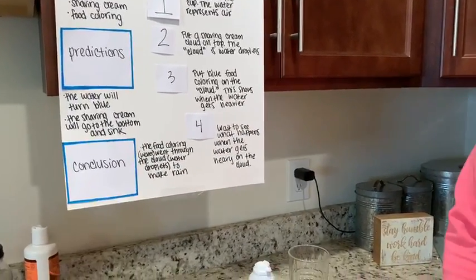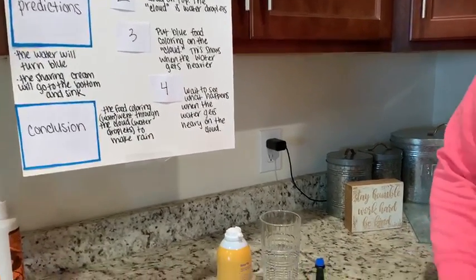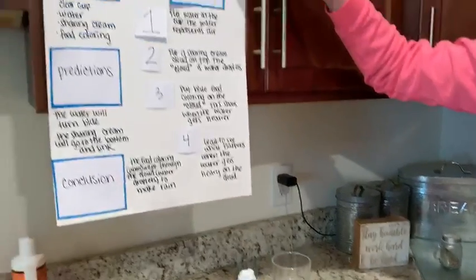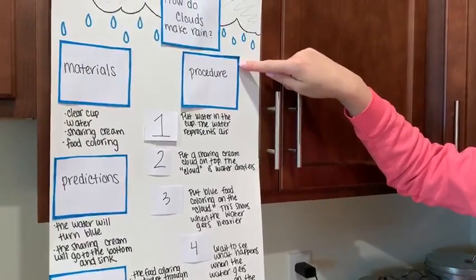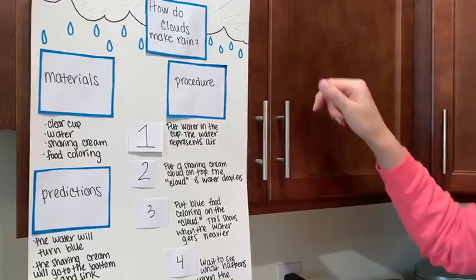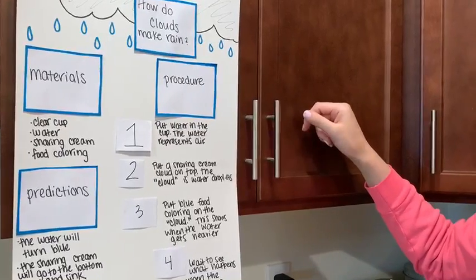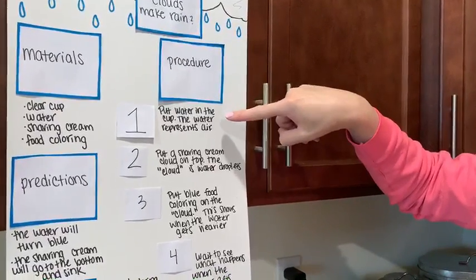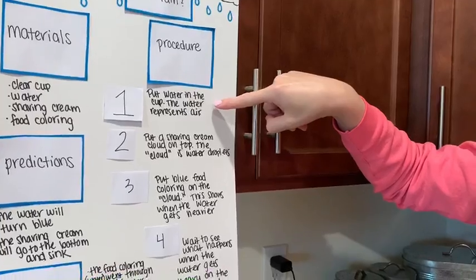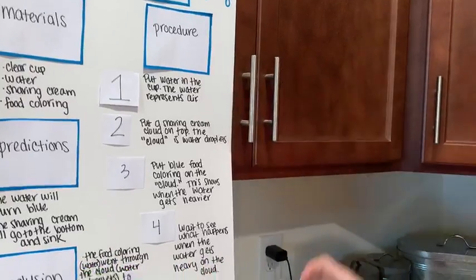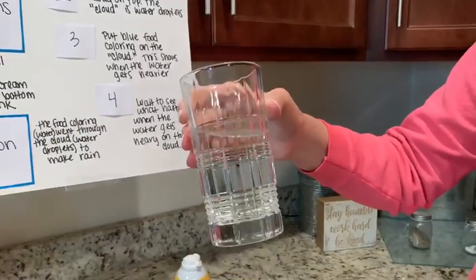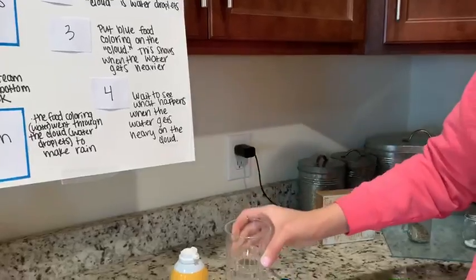So let's find out what happens. Our procedure — this means when we are doing the experiment. Step number one: put water in the cup. The water represents air. You can see my cup is clear and I have water in it already.